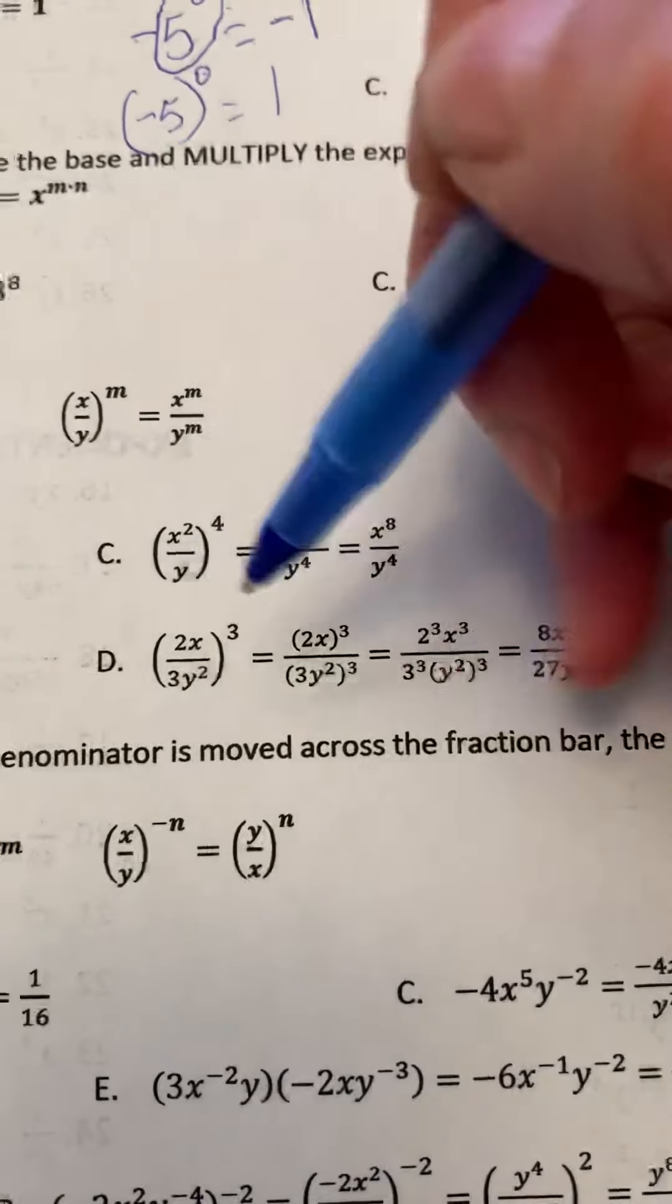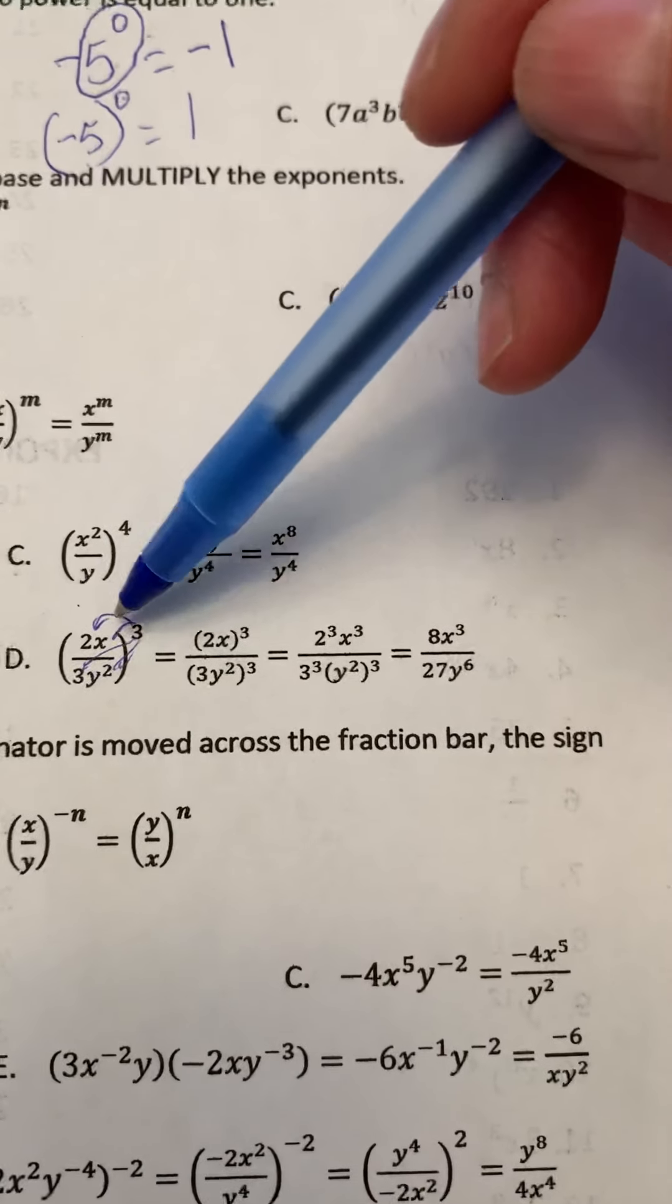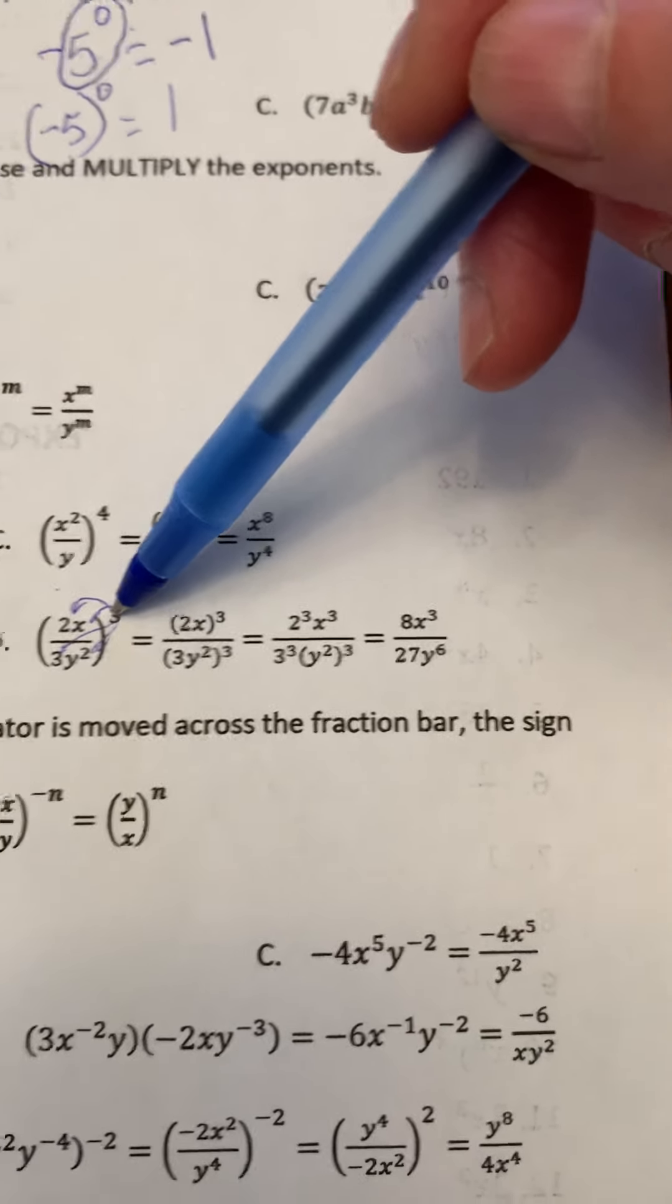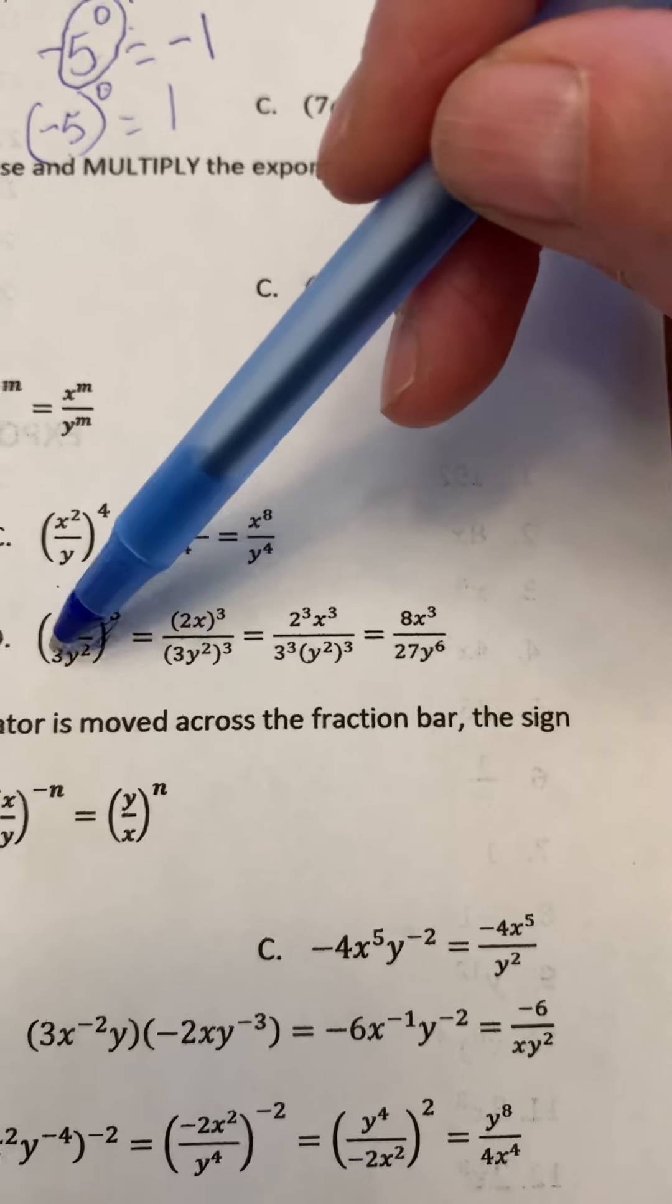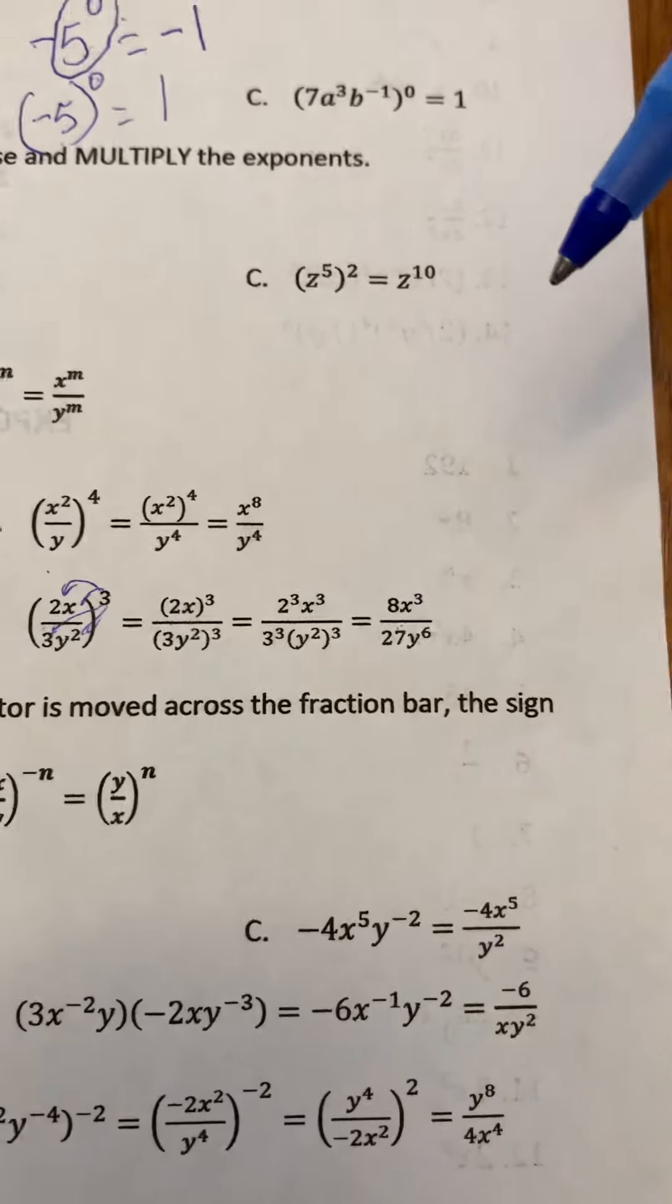Then here, we've got this—it goes to this piece, to this piece, and then also to the bottom. So we end up with 8x cubed and then 27, because 3 times 3 times 3 is 27, y to the power of 6.